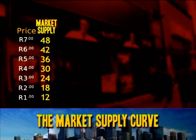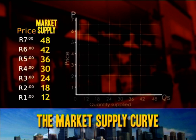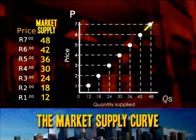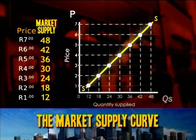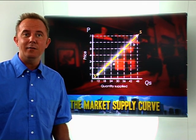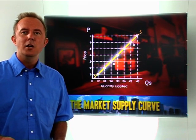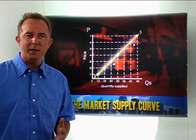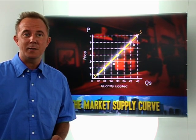Using these values, we can now plot the market supply curve, showing the total quantities of a good or service that all suppliers will produce at each possible price. The market supply curve has the same properties as the individual supply curve — it's upward sloping, showing that an increase in the price increases the quantity supplied and a drop in the price decreases the quantity supplied.